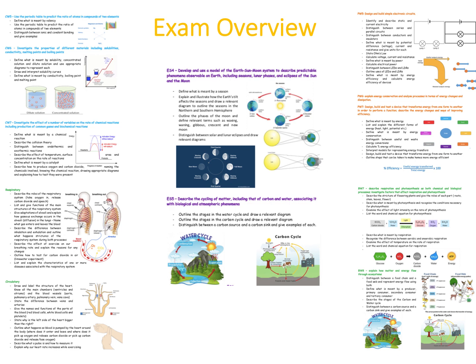That's the same for all learning outcomes. For respiration and photosynthesis, it's broken down into learning intentions. For the respiratory system, instead of just being told to know the structure and function, you're given the absolute musts: describe the roles of the respiratory system, give functions of the main parts, adaptations of alveoli, how gas exchange occurs, how exercise affects breathing rate or pulse rate, how to test for carbon dioxide, and the characteristics of diseases associated with the respiratory system.